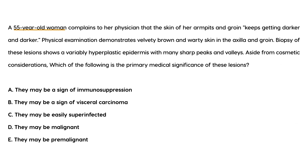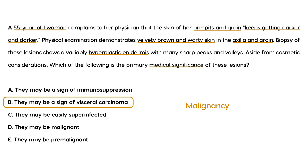Next question: A 55-year-old woman complains that the skin of her armpits and groin keeps getting darker. Physical examination shows velvety, brown, warty skin in the axilla and groin, and biopsy shows a variably hyperplastic epidermis with sharp peaks and valleys. Aside from cosmetic considerations, the primary medical significance of these lesions — other than obesity or insulin resistance — is that they may be a sign of a visceral carcinoma.